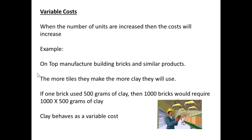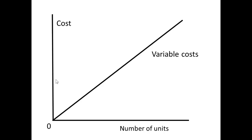If you keep increasing the number of units, some of the costs increase. For example, if you're making bricks, the more bricks you make, the more materials you're going to use. If you're making tiles, the more tiles you make, the more clay you will use. So if one brick used 500 grams of clay, then 1,000 bricks would require 1,000 times 500 grams of clay. In other words, clay behaves as a variable cost — when the number of units increases, the cost increases. If we plot cost against the number of units on a graph, we get a slope.